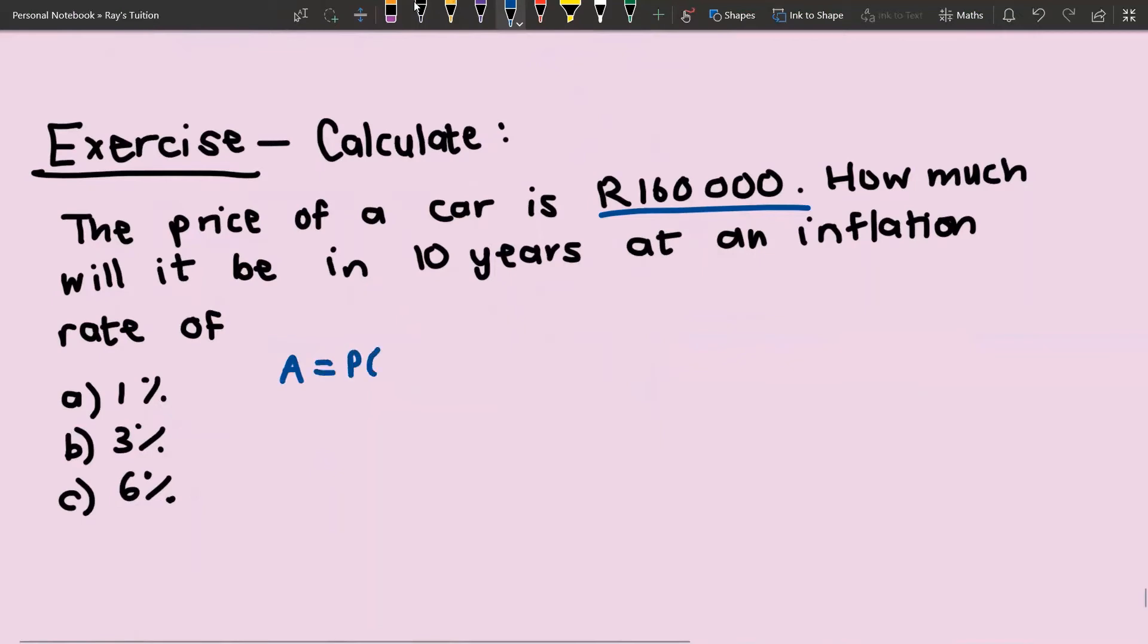Let's do the first one. We're using compound interest, so we're going to use A = P(1+i)^n. We want to know what it will be in 10 years time, so the accumulated amount. The principal amount is 160,000, the interest rate in the first case is 1%, which is 1.01 to the power of 10. If we calculate that, typing it into our calculator, we get R176,739.54.